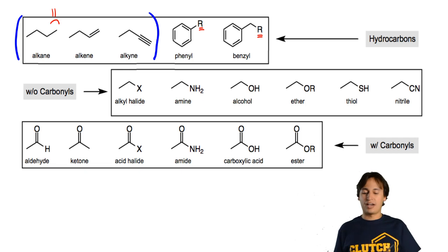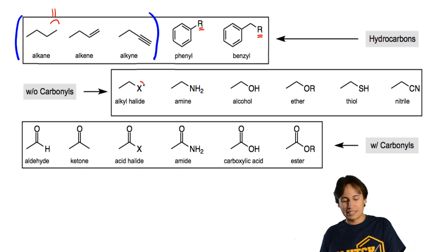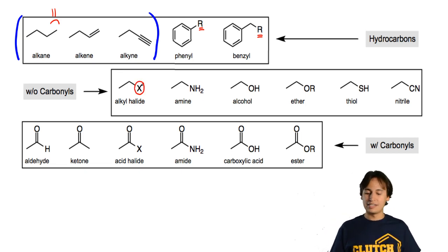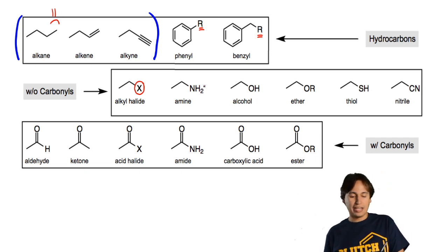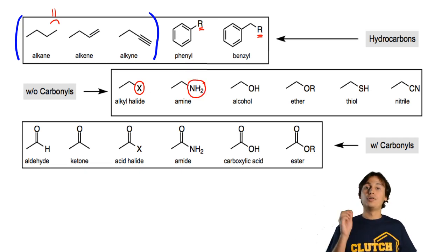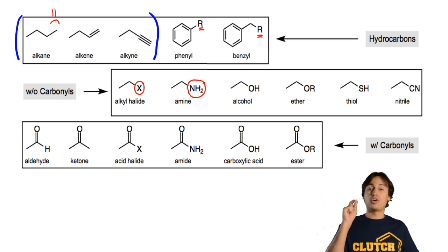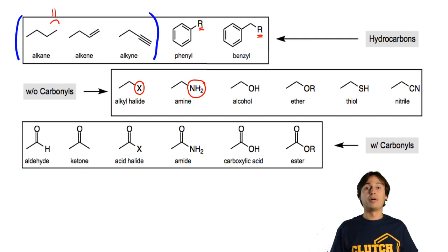Remember that if you attach a halogen with a single bond to carbons, that's called an alkyl halide. Remember that if you attach a nitrogen-containing group to carbon with a single bond, that's called an amine.